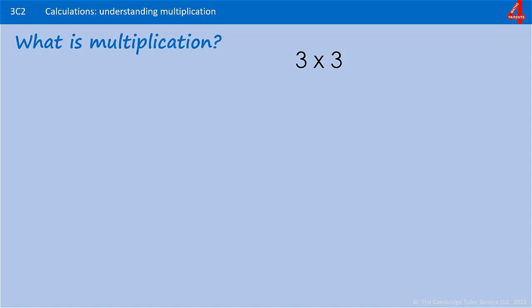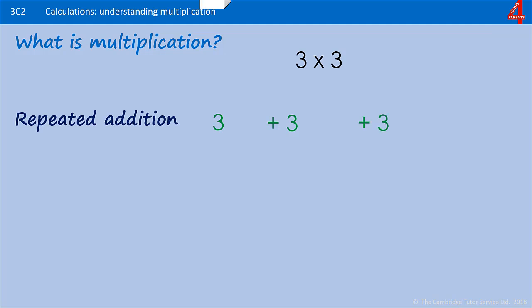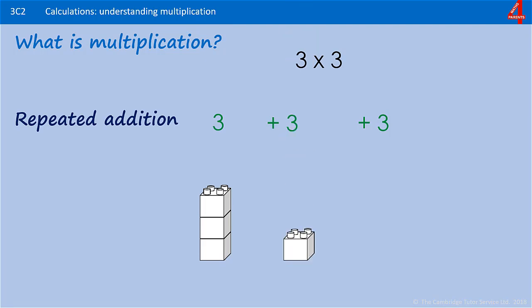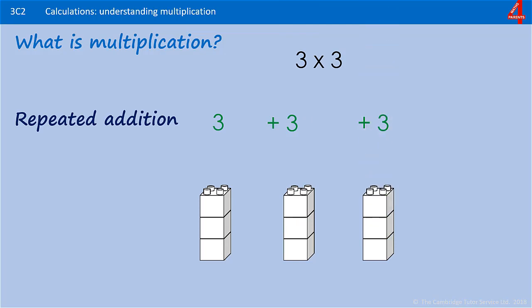For example, 3 multiplied by 3. One way we can look at multiplication is as repeated addition. 3 times 3 is 3 add 3 add 3. So if we had 3 building blocks here, we add another 3 building blocks, and we add another 3 building blocks. 3 add 3 add 3 is 9 — that's 3 lots of 3. 3 times 3 is 9.